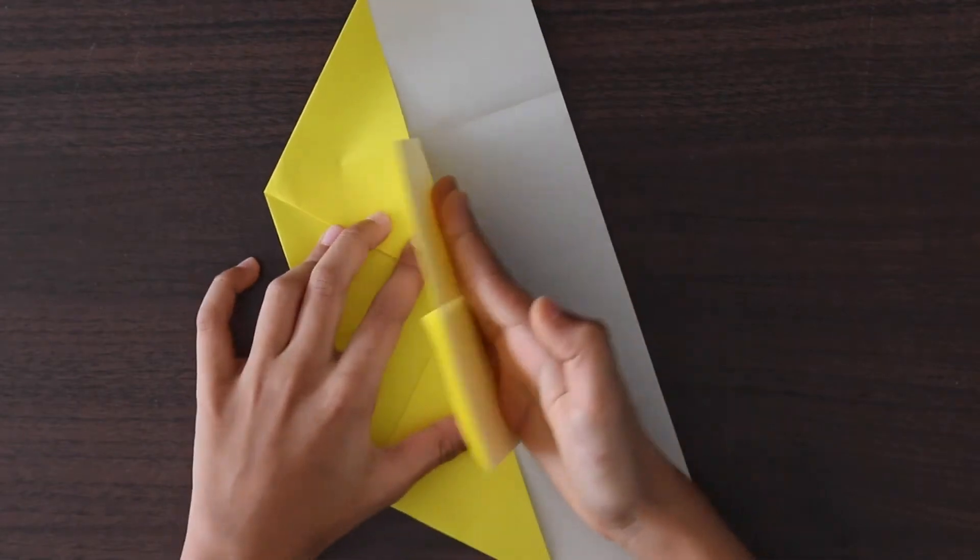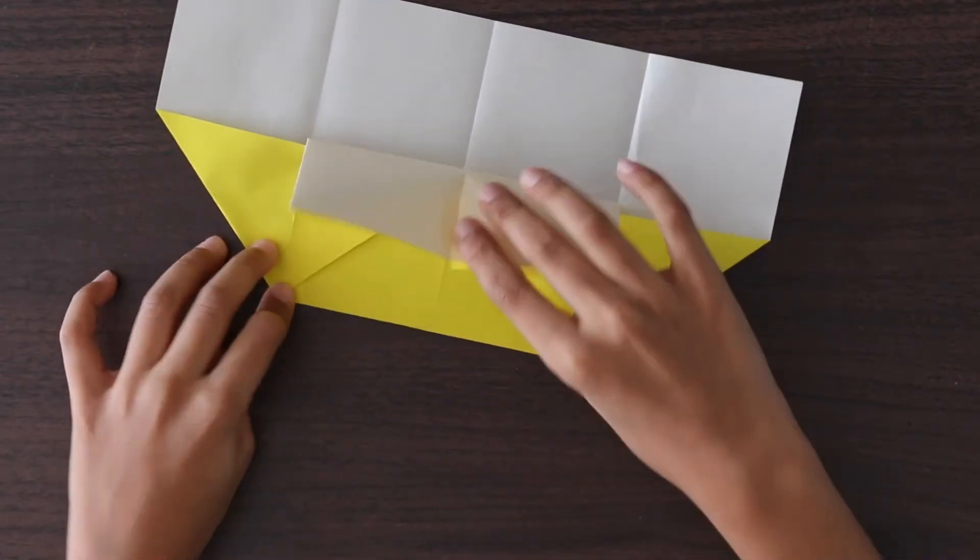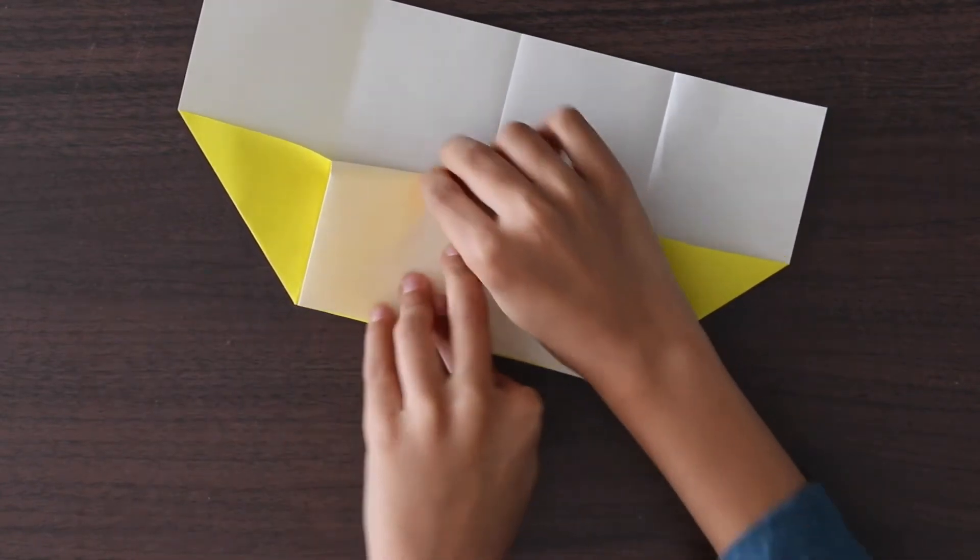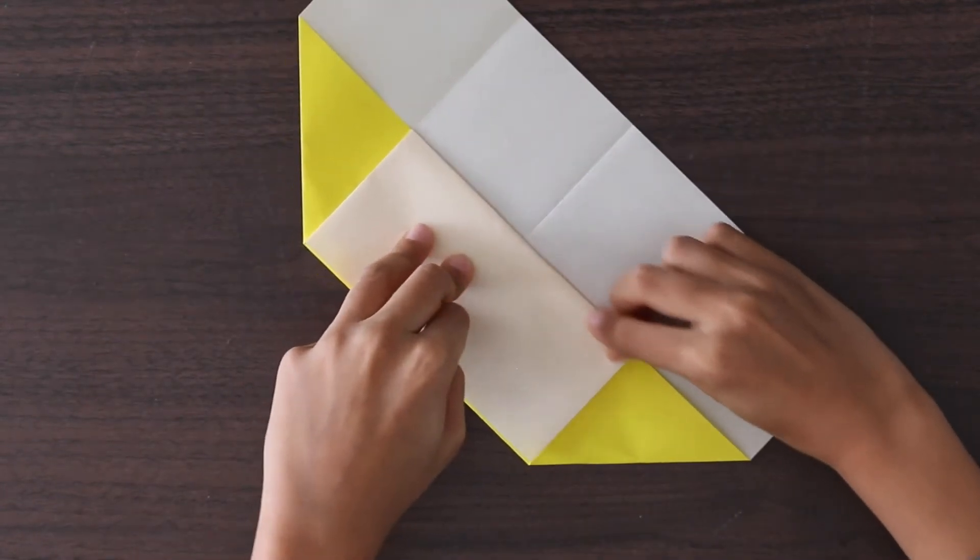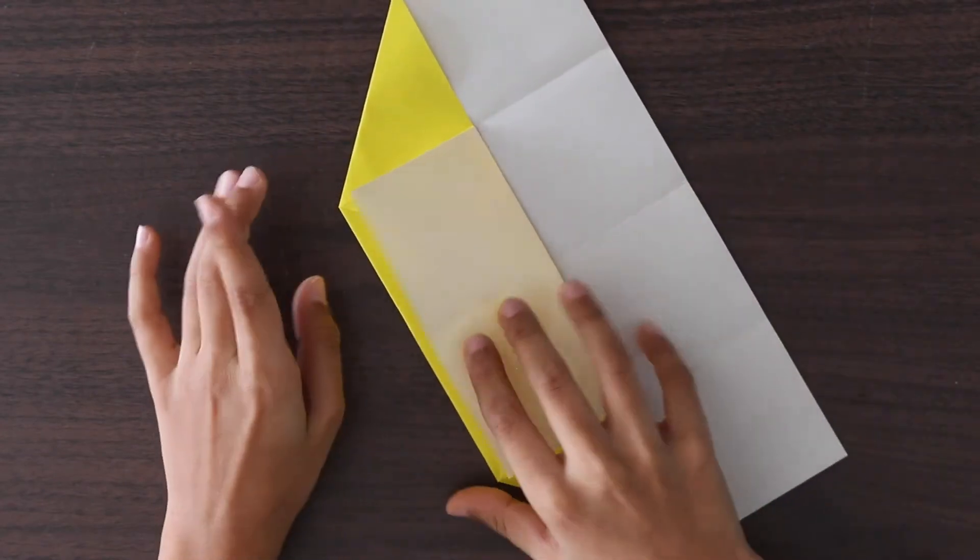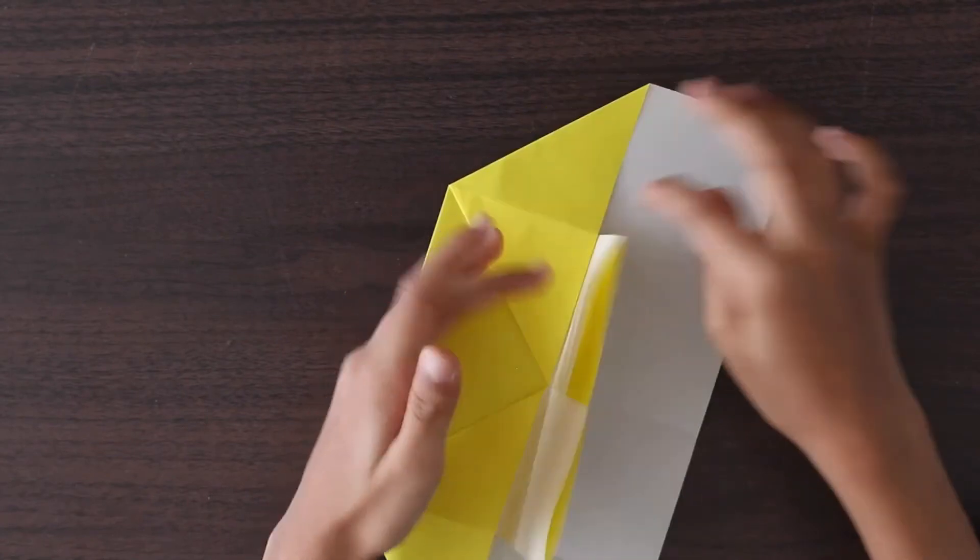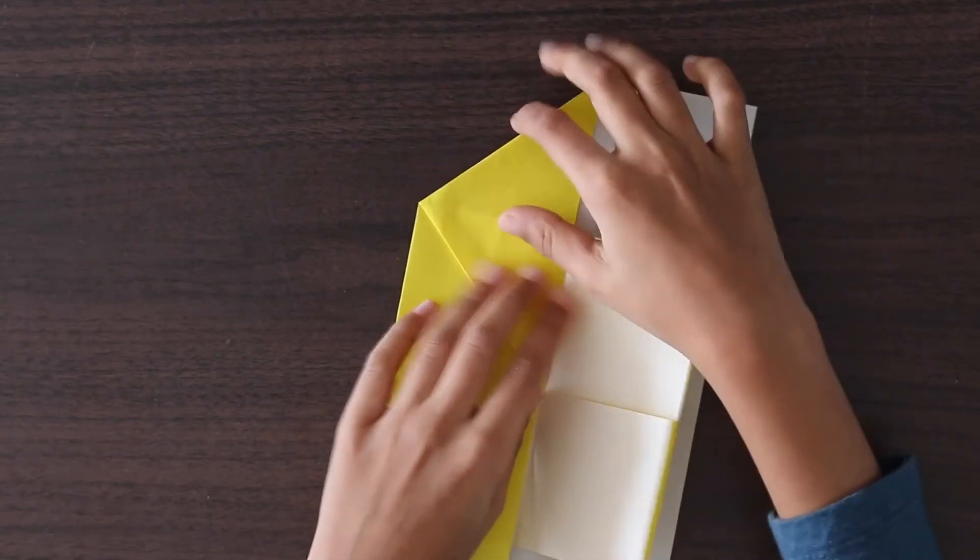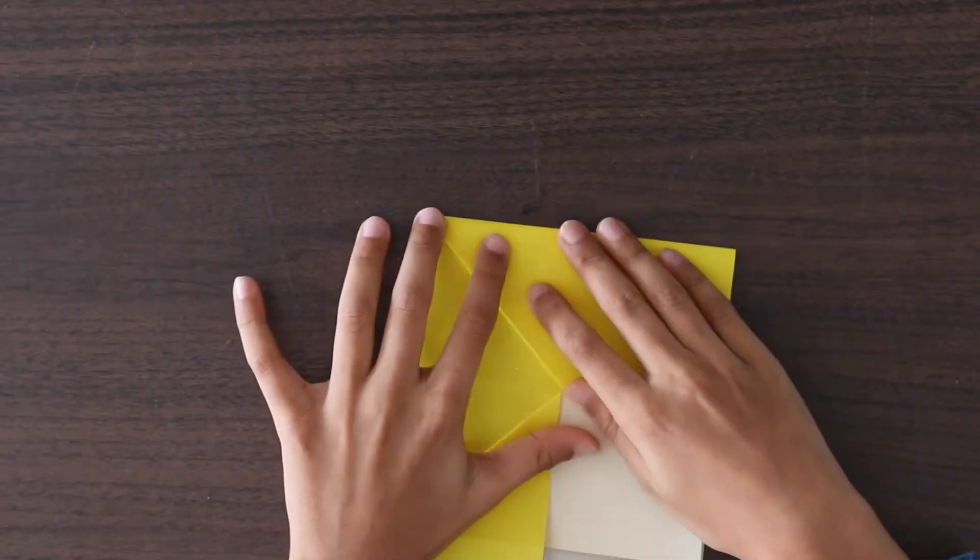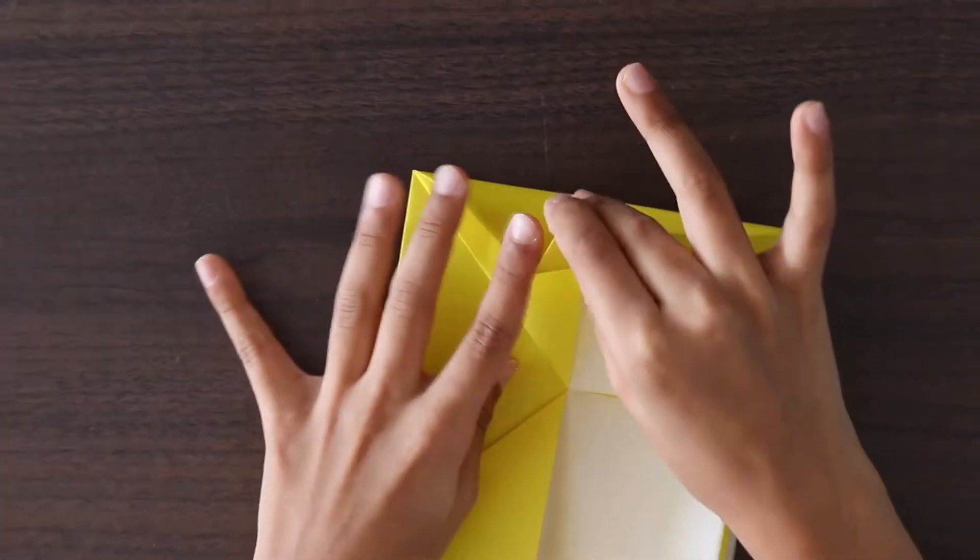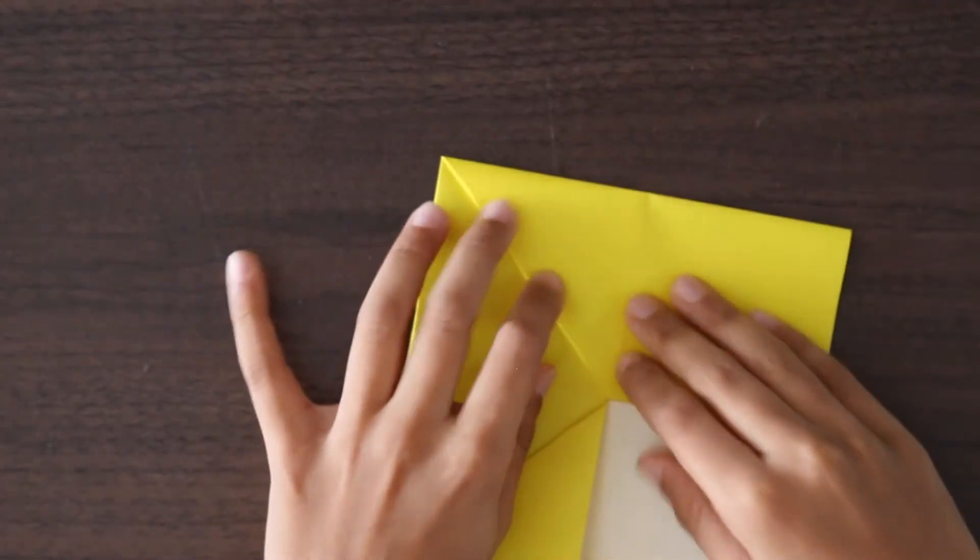So you can see we have a little flap there. Just fold it over, or you can just fold it up so this edge aligns with the edge below.